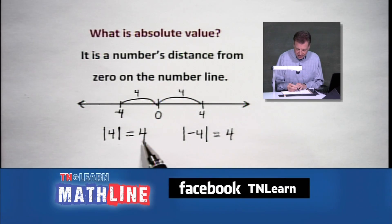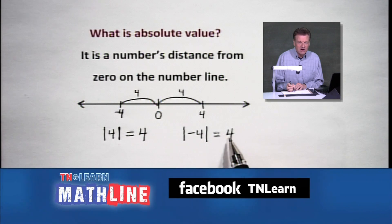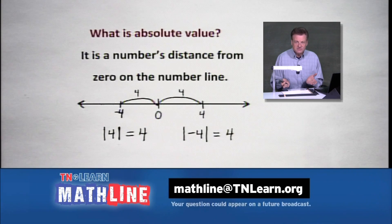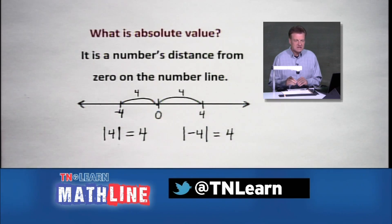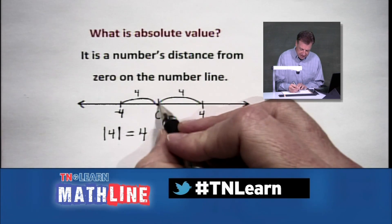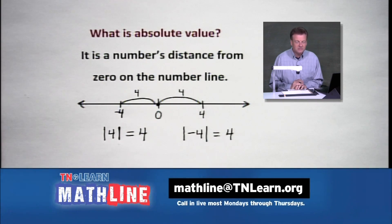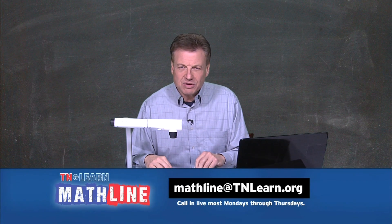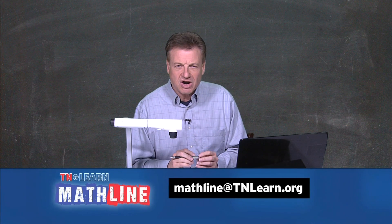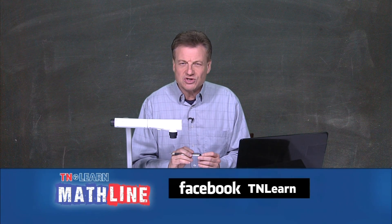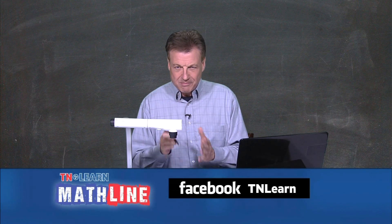Distance is always positive. Someone asked: what if it was zero? The absolute value of zero is zero. Distance is always positive unless we have a zero situation. So that's what we're after today — looking at absolute value. We're going to do a few computations, then start working into some absolute value equations and see how the solutions pan out.